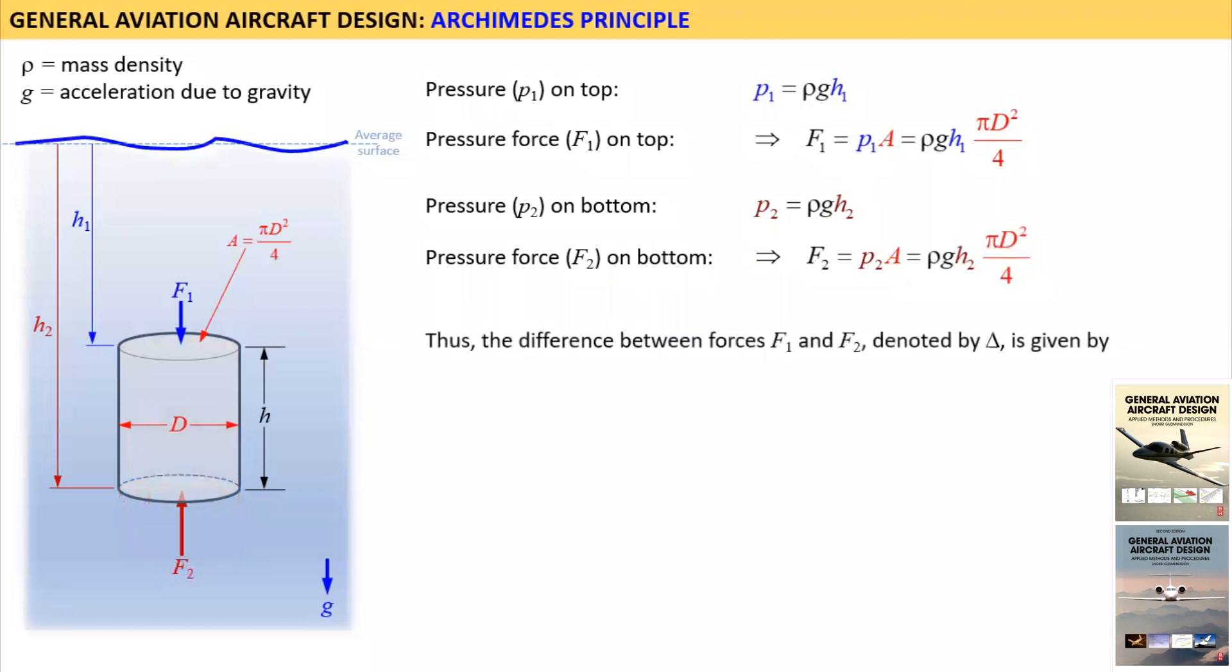Thus the difference between forces F1 and F2 denoted by delta is given by the equation. Inspecting the two force equations shows that the magnitude of F2 is greater than F1 because the magnitude of H2 is greater than H1.